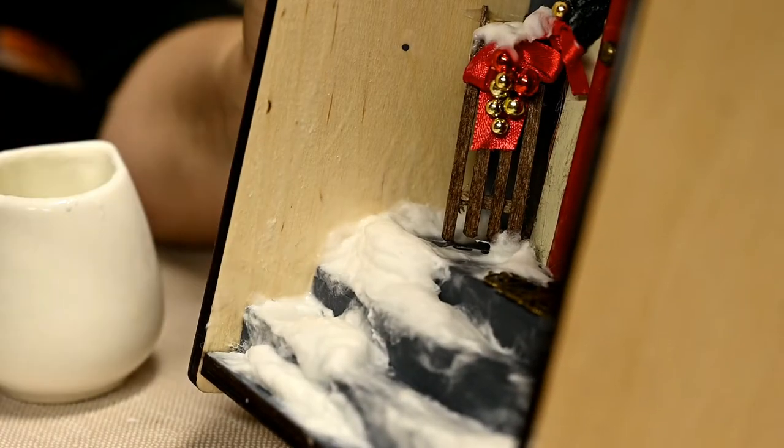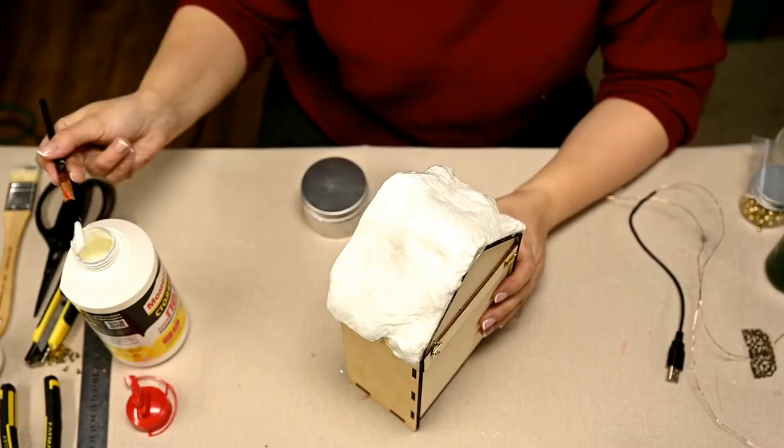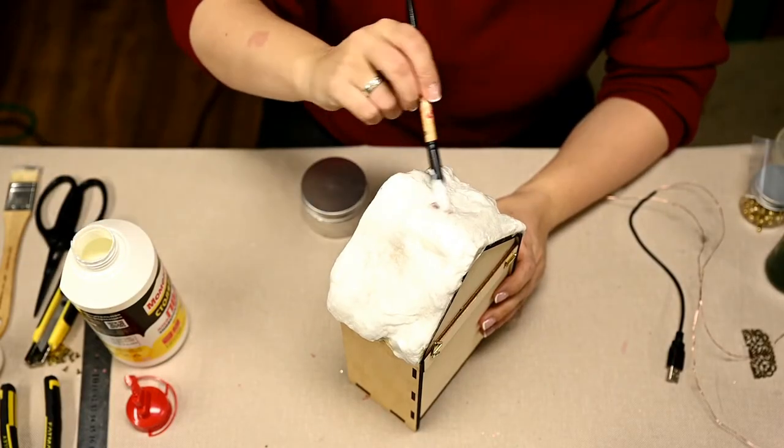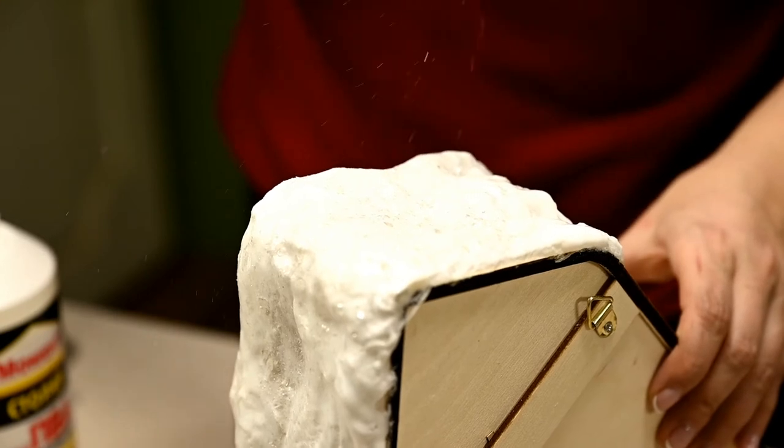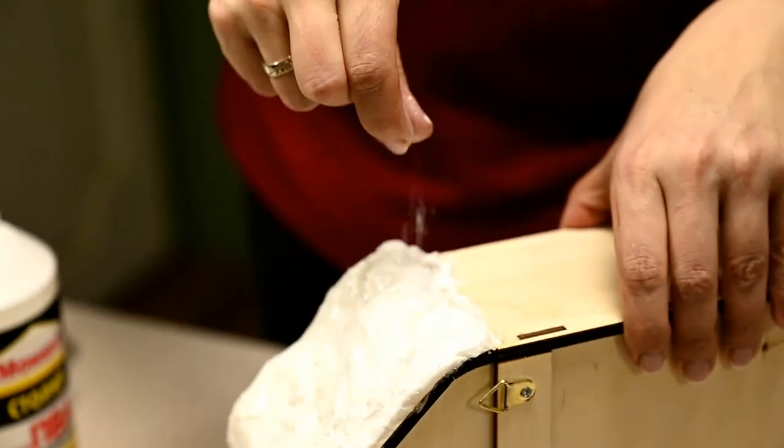I'm gluing the snowman over one of the stairs. And after dry I'm applying more white glue and in the end add some mica flakes. You can also use some white glitter or leave it as is.